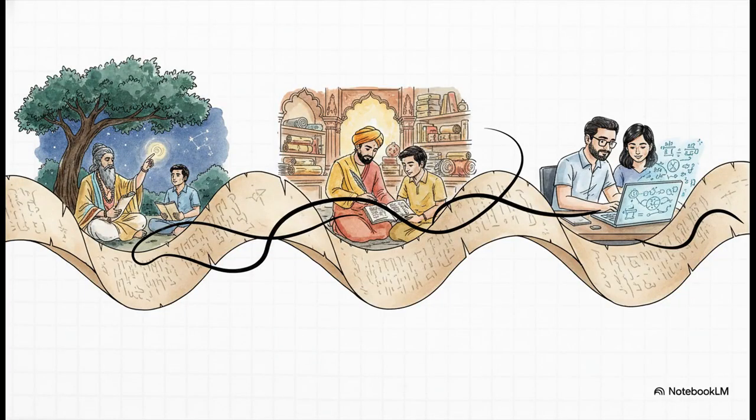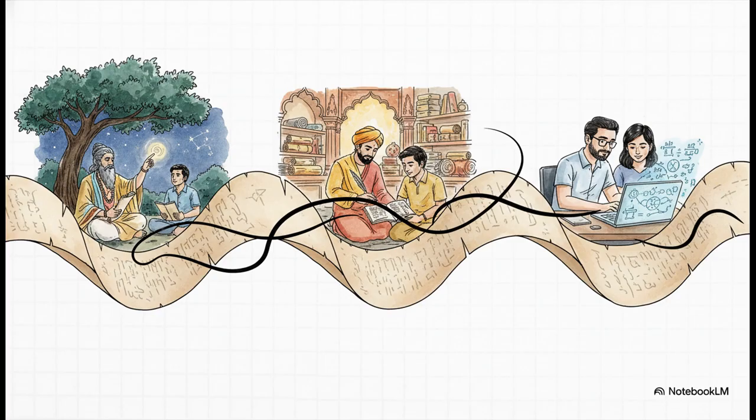So when you step back and look at the big picture, you're not just looking at an old book. You're witnessing a 7,000-year-old intellectual conversation that has simply never stopped. It's this amazing, unique space. It's the place where hard, cold mathematics meets the deepest questions of philosophy, where the precise calculation of where a planet is in the sky is used to explore what it all means.